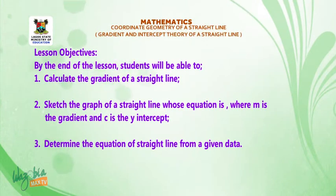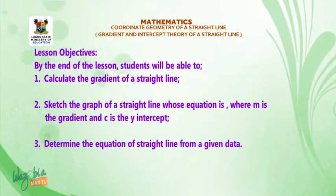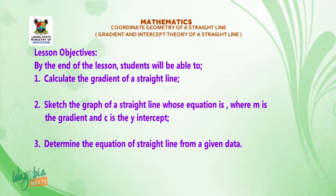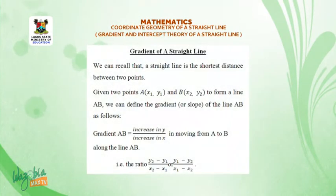Lesson objectives: by the end of the lesson, students will be able to: one, calculate the gradient of a straight line; two, sketch the graph of a straight line whose equation is y = mx + c, where m is the gradient and c is the y-intercept; three, determine the equation of a straight line from given data. We recall that a straight line is the shortest distance between two points.